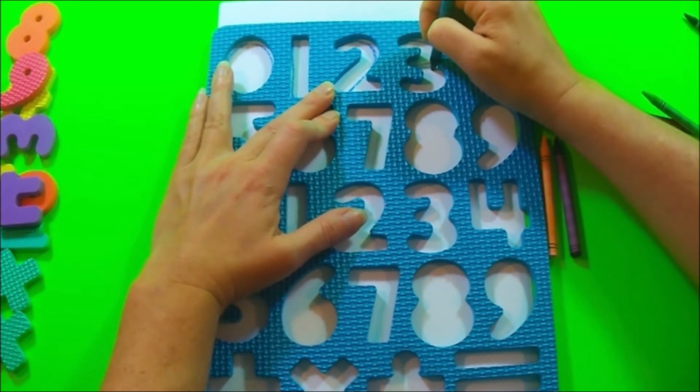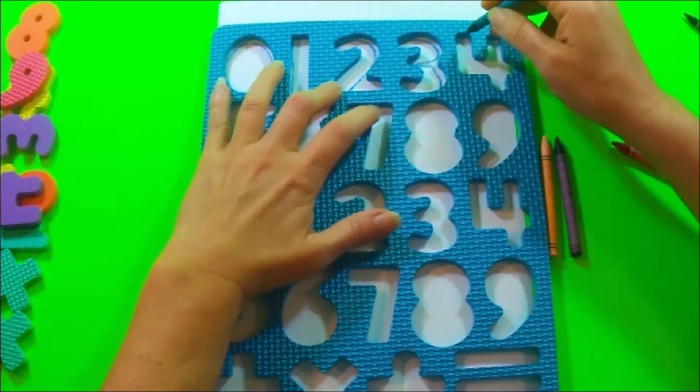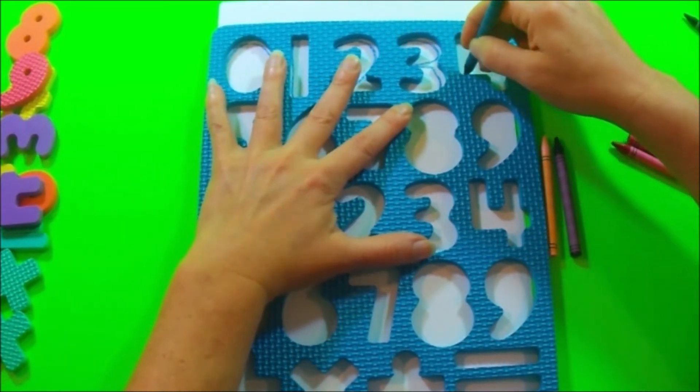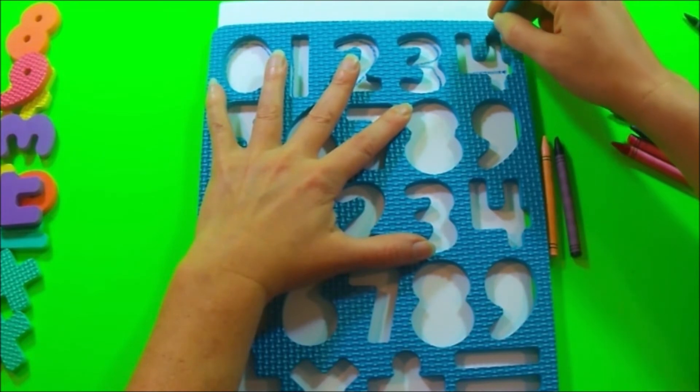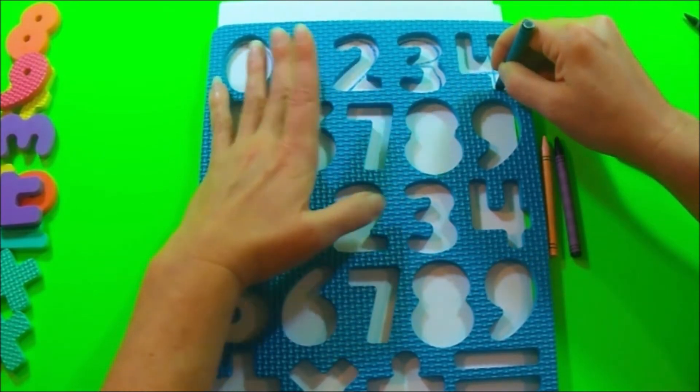Three. Around, around. Four. Down, across. Lift your pencil and go straight down.